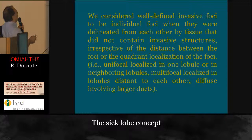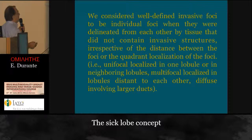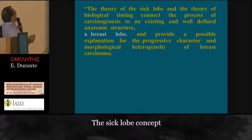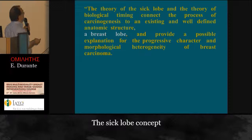We considered well-defined invasive foci to be individual foci when they were delineated from each other by tissue that did not contain invasive structures, with respect to the distance between the foci or the quadrant localization of the foci. It has unifocal localization in one lobe or enabling in the lobes; multifocal localized in lobes at a distance from each other; diffuse involving larger ducts. The theory of the sick lobe and the theory of biological time connect the process of carcinogenesis to an existing and well-defined anatomic structure, and provide a possible explanation for the progressive character and morphological heterogeneity of breast carcinoma.